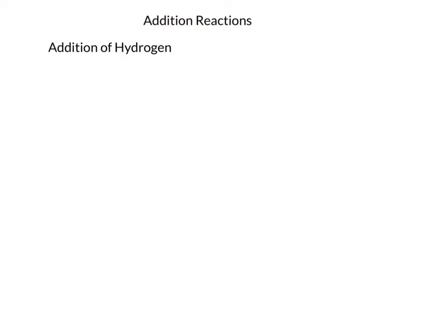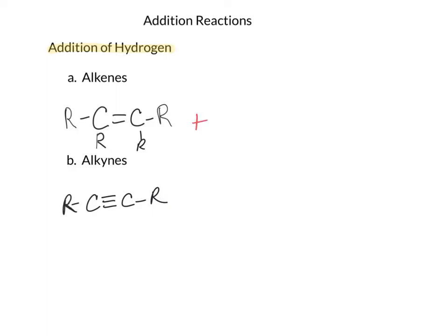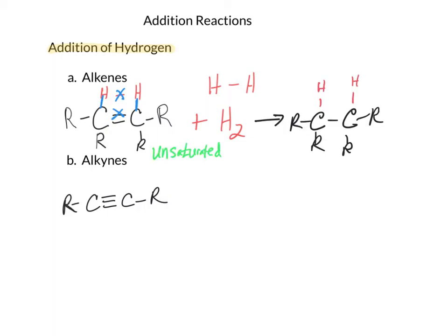Let's start with the addition of hydrogen to an alkene and an alkyne. When hydrogen is added, we're going to take the two H's and separate them so that we can see them on each side of the double bond. We add a hydrogen to one side, break the double bond, and make a bond to the other hydrogen while breaking the bond between the two hydrogens — making a bond, breaking a bond, making a bond, breaking a bond — so that the total number of bonds is the same, just bonded differently. As we do this, we go from an unsaturated alkene to a saturated alkane.